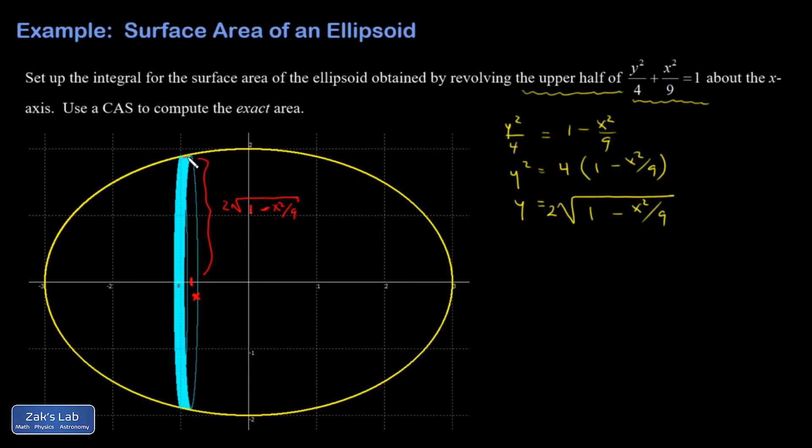Now I add the fact that this little chunk of arc right here, ds, is given by 1 plus the square of y prime dx. And I'm going to have to work out y prime so that I can write that down. So the idea is that I'm going to cut and unroll this ribbon. And when I do that, the length of the strip will be equal to the circumference of this, and the width of it will be equal to this little ds.